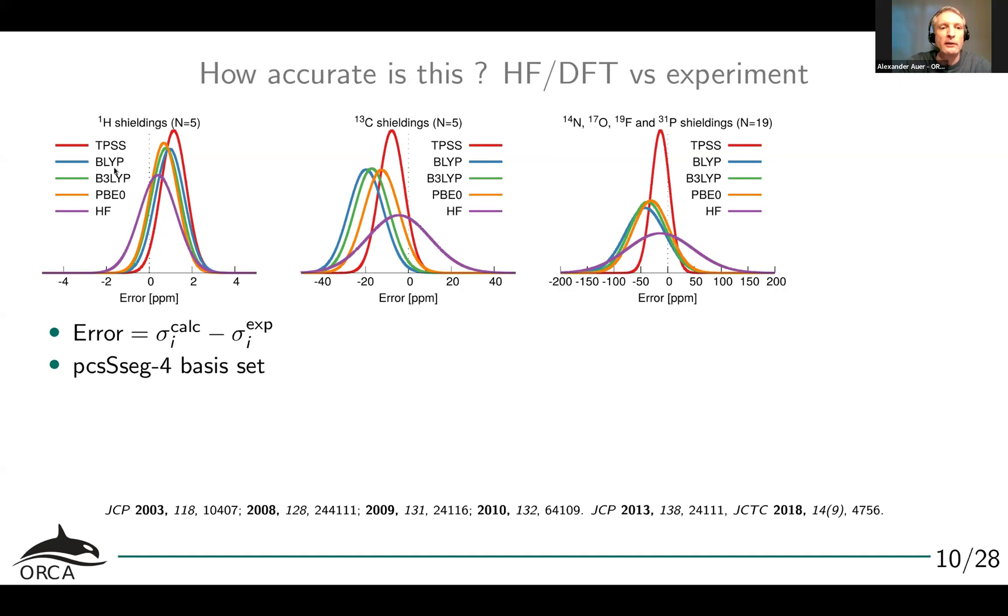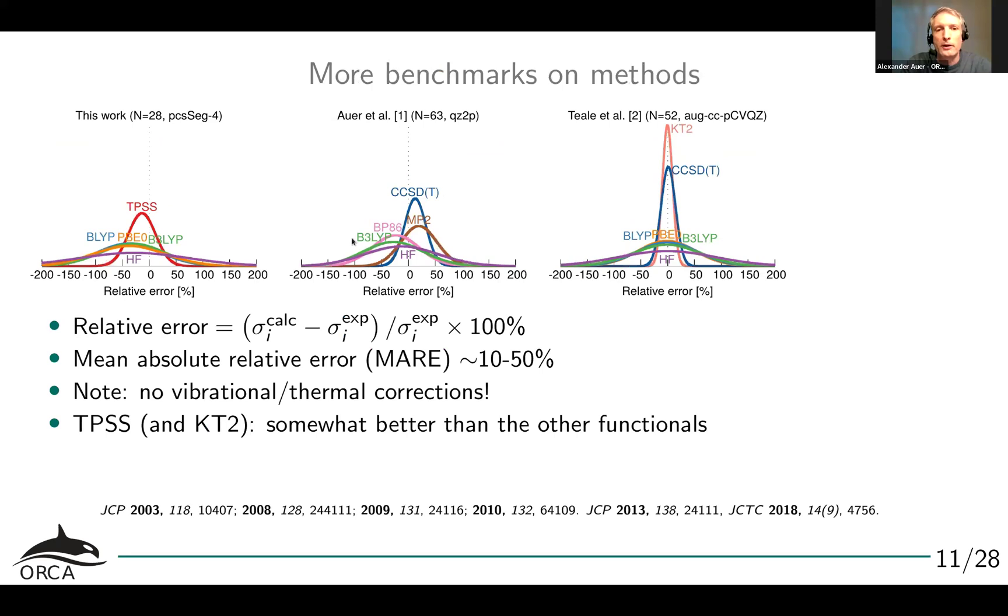We see here, for example, B3LYP, which is great for geometries, doesn't seem to perform that well. For shieldings, TPSS is a little bit better. If we go to correlated methods, these are older benchmarks that we've done. You see that, for example, CCSD parentheses T, the gold standard for energies, is also very good for NMR shifts. MP2 and DFT are roughly both in the same ballpark.